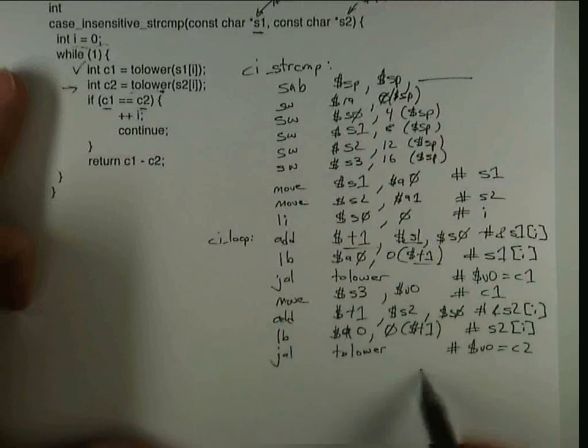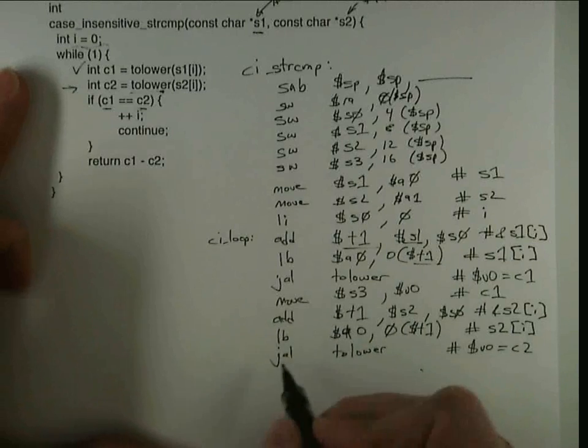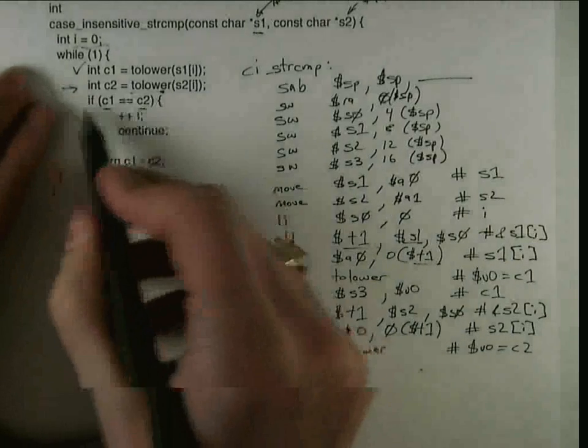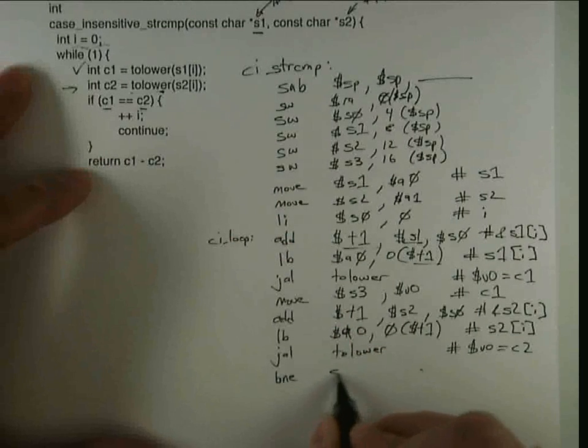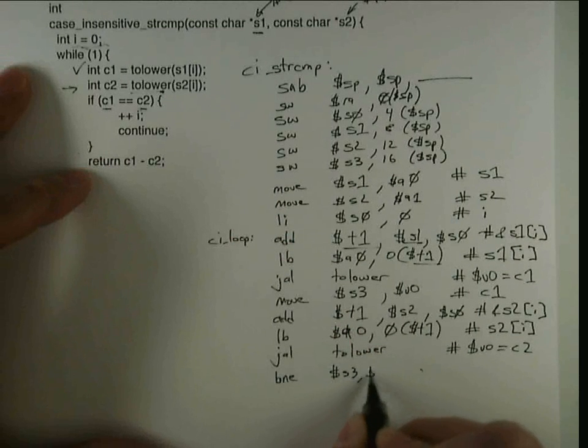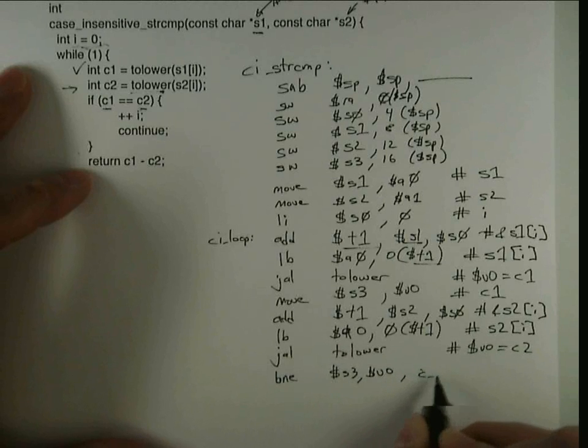And so again, I invert the condition for the case to skip over this. So if they're not equal, if s3 is not equal to v0, then I go to ci done.